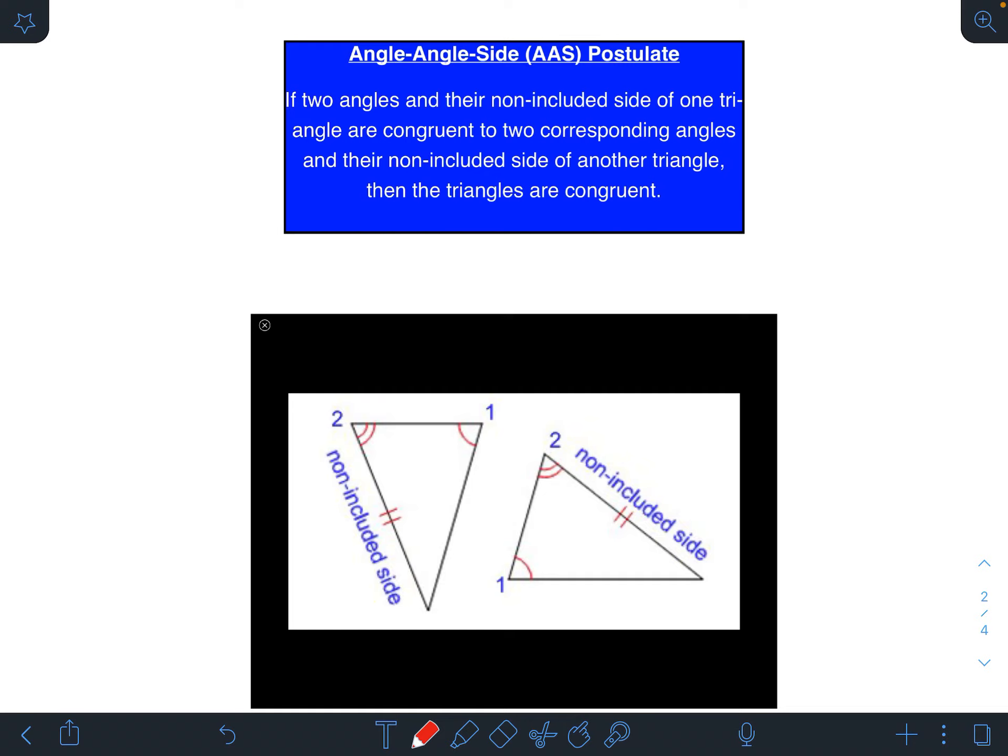Now, it reads: if two angles and their non-included side of one triangle are congruent to two corresponding angles and the non-included side of another triangle, then the triangles are congruent.